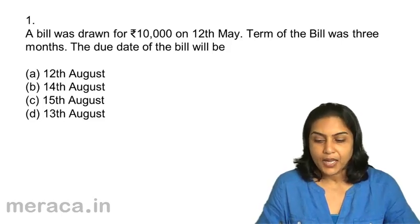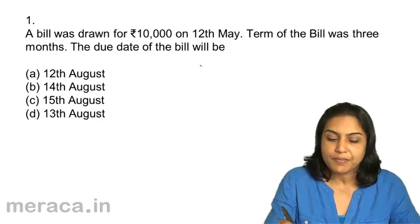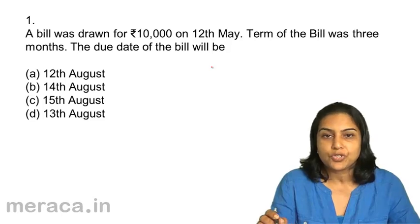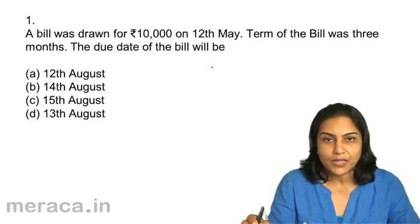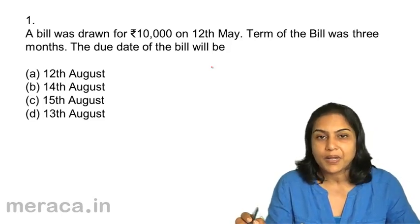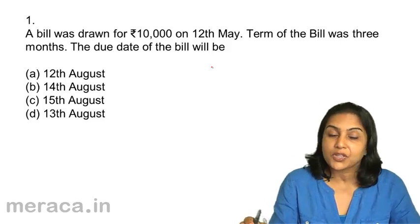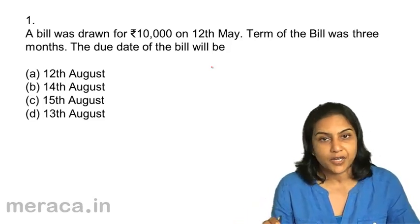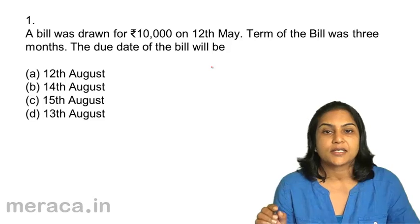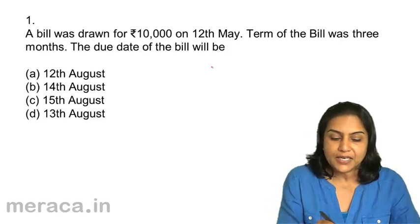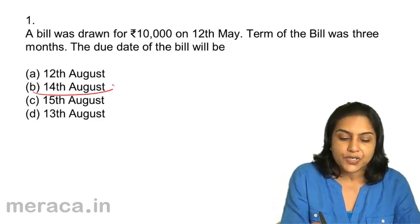12th May plus 3 months — June, July, August — so it's 12th August plus 3 days of grace, giving 15th August. But 15th August is a public holiday — it is Independence Day. Therefore, it will be the immediately preceding day.